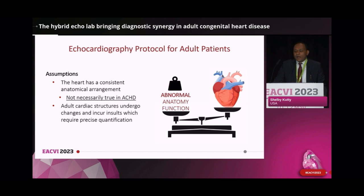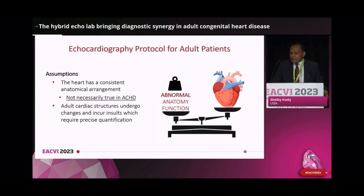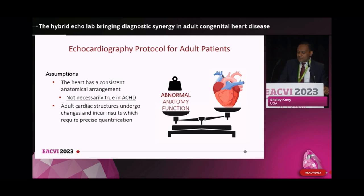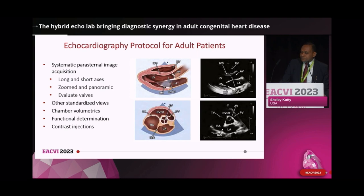We'll begin by reviewing some of the attributes of the adult echo lab, where the protocols are designed to quantify the changes and insults to which the adult heart is predisposed. Even when these are additive, as in the low flow, low gradient circumstances of aortic stenosis that is severe, the adult echo methodology capitalizes on strong quantitative techniques like the continuity equation. It's commonly misleading to assume normal ventricular function and to use peak and mean flow velocities for estimation of severity of stenosis, so estimation of the actual valve area is the standard approach.